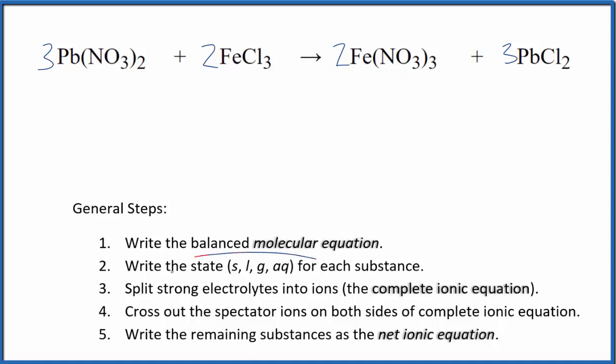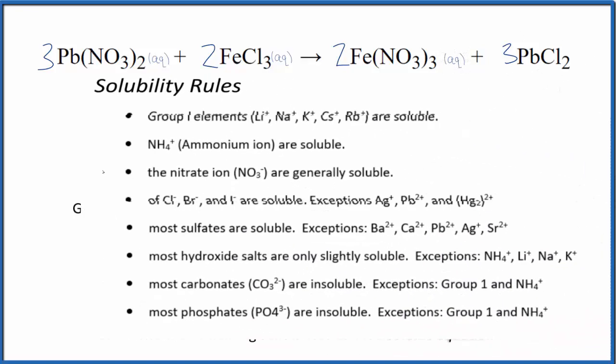Now we can write the state for each substance. If you know your solubility rules, nitrates are very soluble, and chlorides, with a few exceptions, are also very soluble. Here we have another nitrate, and we have a chloride. But lead 2 chloride, that's one of the exceptions. This is one you need to remember.